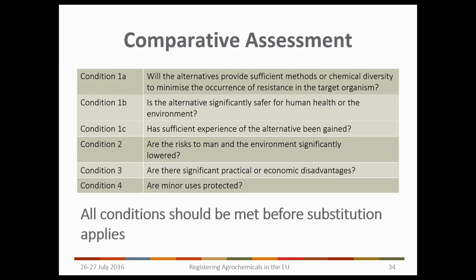Question: can Karen repeat her experience and advice on the comparative assessment process for the Northern Zone — how different is it to the Central Zone? I can't fully answer that as I've had little experience of making assessments for the various Central Zone countries where there are a large number involved. As a general summary, the Northern Zone will be much stricter in terms of requirements, including voluntary comparative assessment even without a candidate for substitution. It's going to be a case of looking for countries that have their own specific guidance and following that where available.